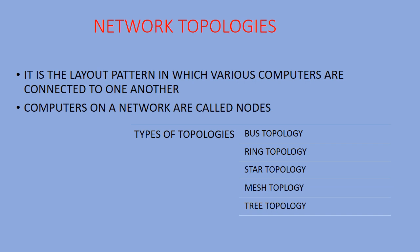Next is network topologies. What is a network topology? It is the arrangement of computers over a network — the layout pattern in which various computers are connected to one another. Just like a class teacher arranges benches in rows, computers are arranged in some pattern over a network, and that pattern is called the topology. Each computer over a network is called a node. We have different types: bus topology, star topology, mesh topology, and tree topology.